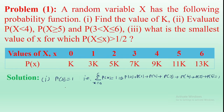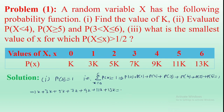From the given tabular column: at X=0, P=K; at X=1, P=3K; at X=2, P=5K; at X=3, P=7K; at X=4, P=9K; at X=5, P=11K; at X=6, P=13K. So K + 3K + 5K + 7K + 9K + 11K + 13K = 1.